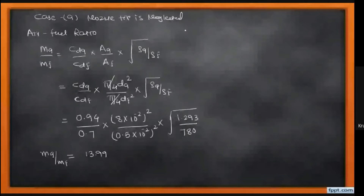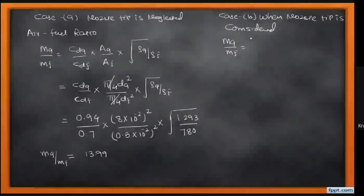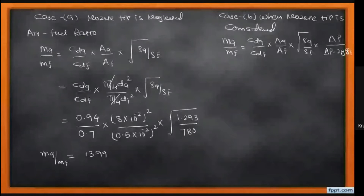For Case 2, the air-fuel ratio formula is modified: mass of air over mass of fuel equals area of air over area of fuel, multiplied by the square root of density of air over density of fuel, multiplied by the square root of delta P divided by (delta P minus z·g·rho_f), where z is the nozzle tip height and rho_f is the density of fuel.